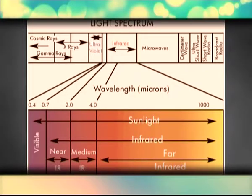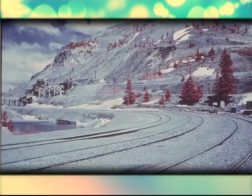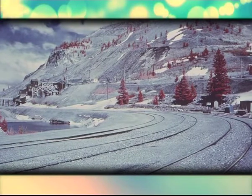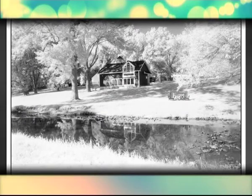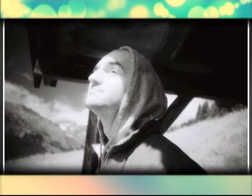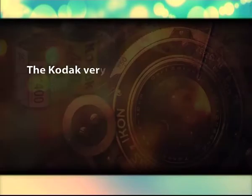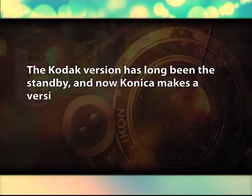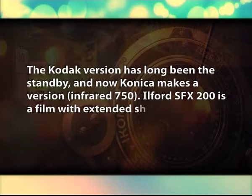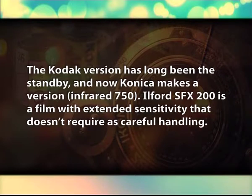Infrared: Infrared film comes in both colour and black and white variations. The black and white takes some special handling and requires the use of a 25A dark red filter. It is unrated as far as speed, but about 200 ASA works pretty well. Wonderful effects are created from plants that are growing during the height of spring. With infrared, pretty much everything looks a bit strange. Black and white infrared does not pick up heat signatures. The Kodak version has long been the standby, and now Konica makes a version — Infrared 750. A Ford SFX 200 is a film with extended sensitivity that does not require as careful handling. All yield a specialised effect and are great to play with. Seeing an entire exhibit done with infrared film gets a bit old.